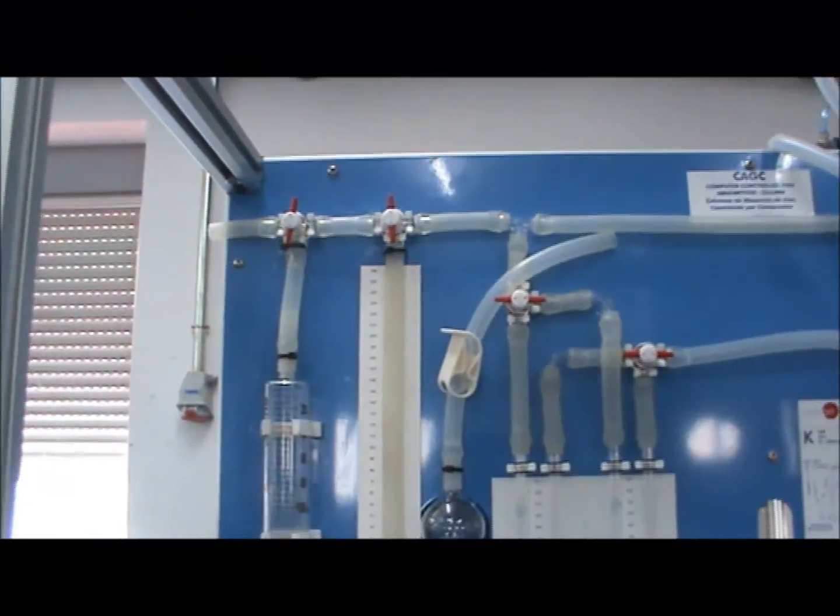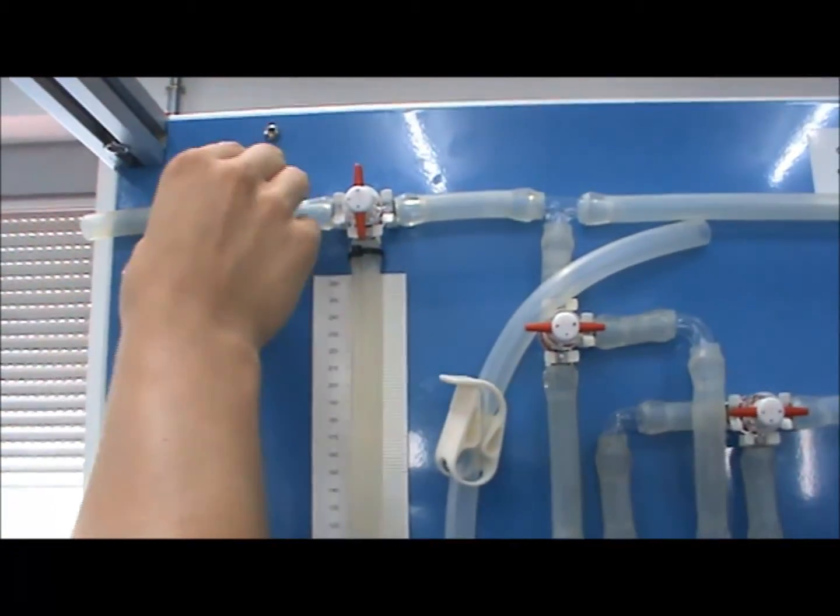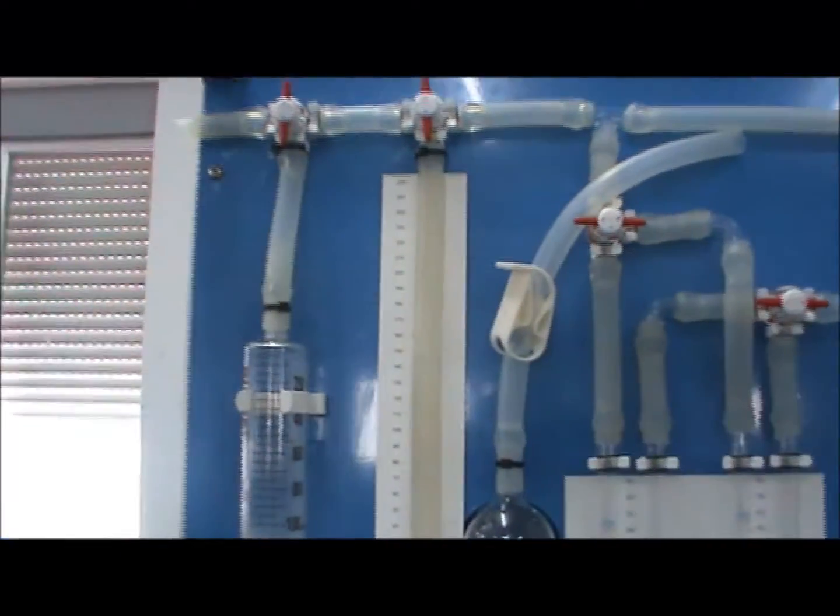Repeat by first closing VT3 and expelling the air to the atmosphere. Make sure the solution rises to a level somewhere within the measured range below valve VT2.